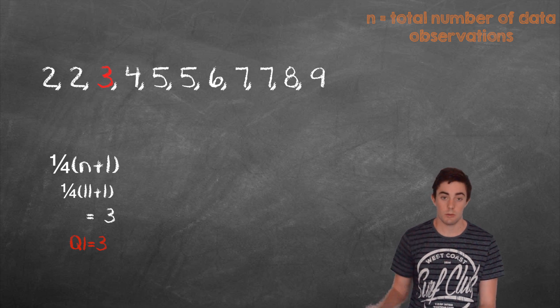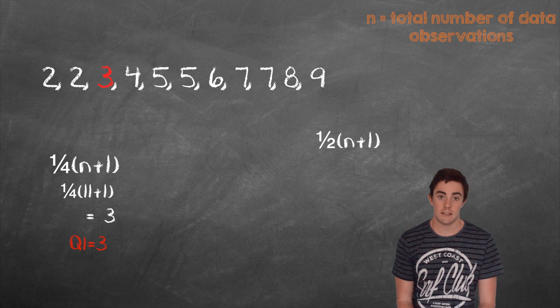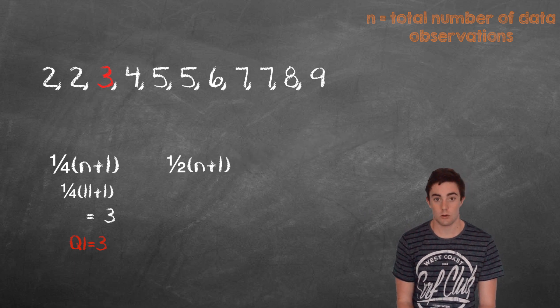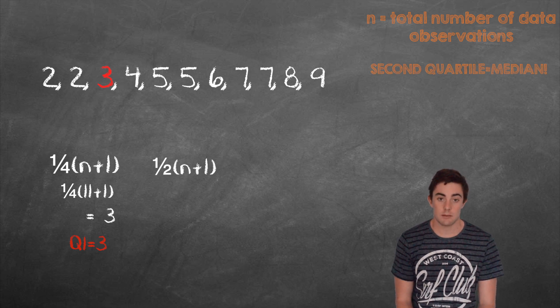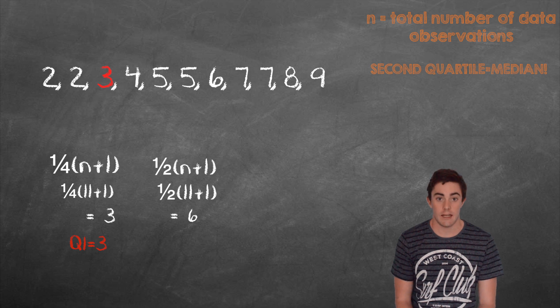To find the second quartile or the median, we will use this formula. Remember that in a test you can be asked to find the second quartile or the median and you need to know that these are the same thing and that the same formula is used in both cases. When we substitute 11 for n, we get 6. And if we look at the sixth data observation, we find that it equals 5. Therefore Q2 equals 5.